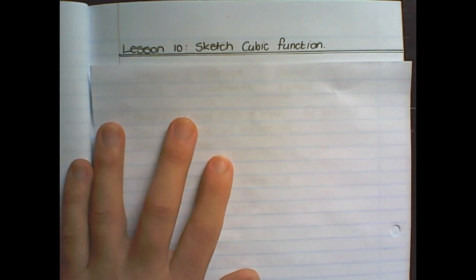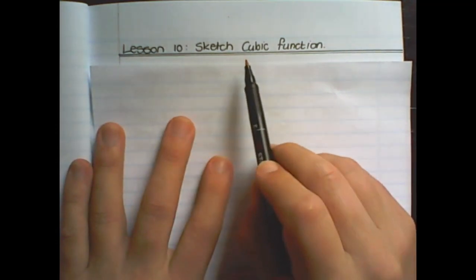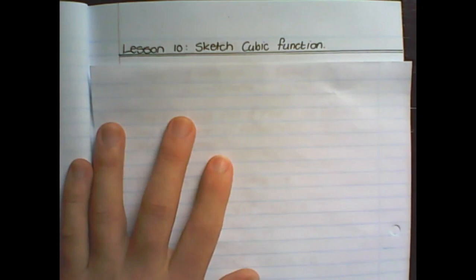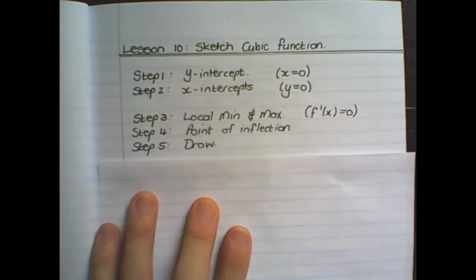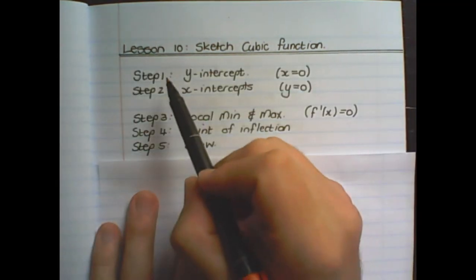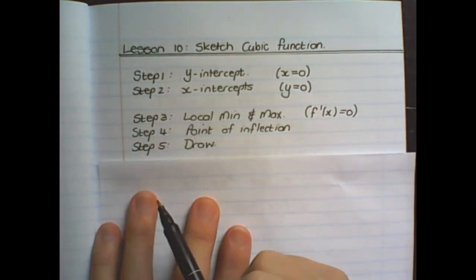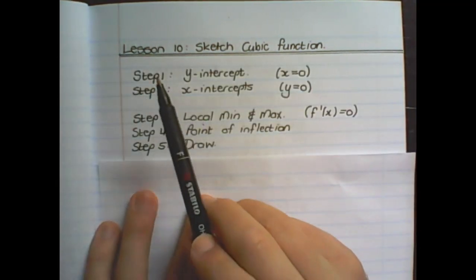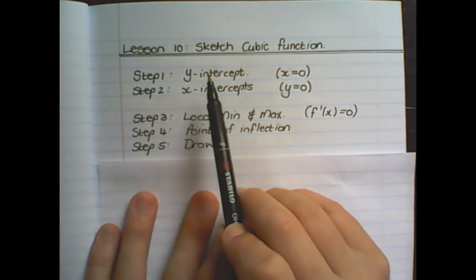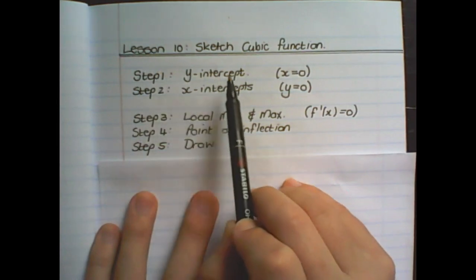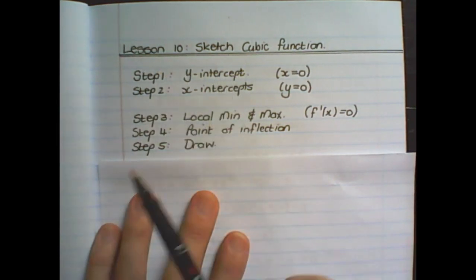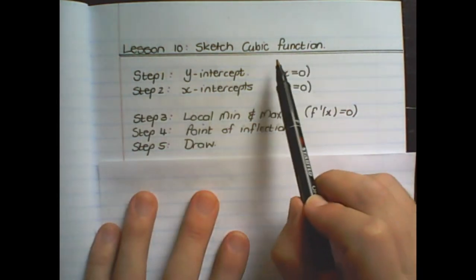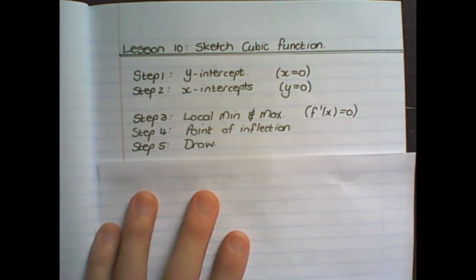In this lesson we will learn how to sketch a cubic function, and we are going to follow five steps. Step one is to find the y-intercept, that is where x is equal to zero.